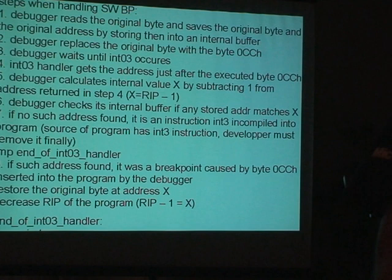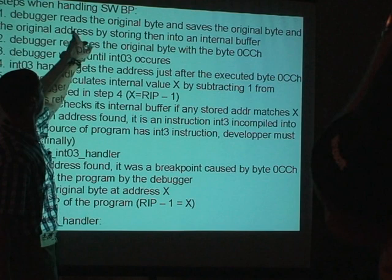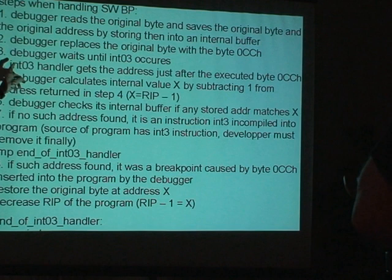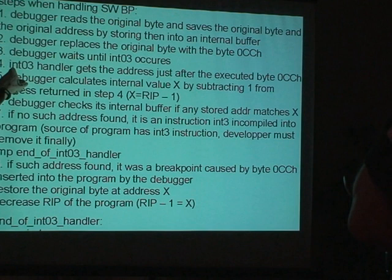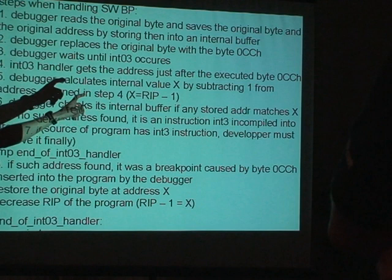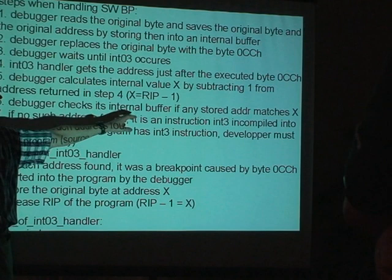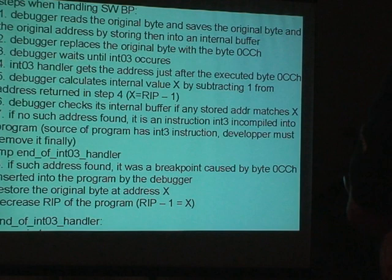The fourth step: the interrupt handler is triggered, and this interrupt handler gets the address — not this address, but one byte after this address — because the interrupt is a thread-type exception. It is triggered after the instruction is executed. So the interrupt handler gets the address one byte after the starting address of the instruction. The debugger subtracts one from this address and gets address X, which is the starting address of the instruction CC.